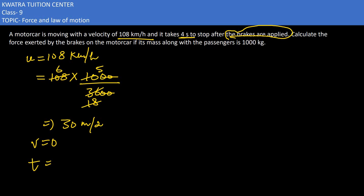And how much time is it taking? 4 seconds. u is there, v is there, t is there. Then what would be the mass? The mass is given as approximately 1000 kg. To find the force, we can use this formula: m in bracket v minus u divided by t.